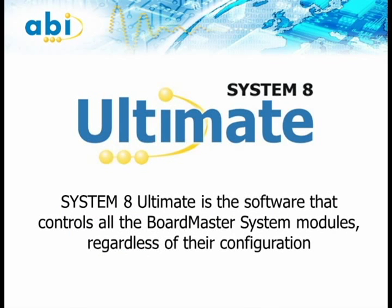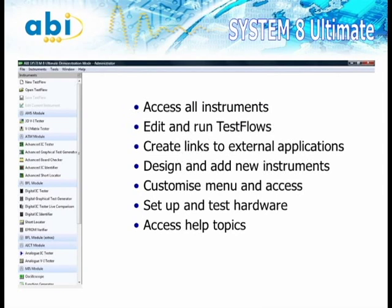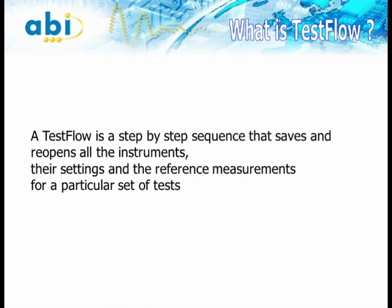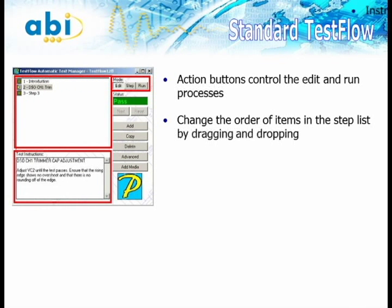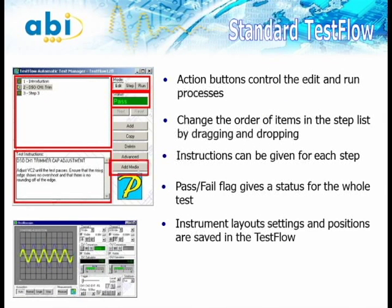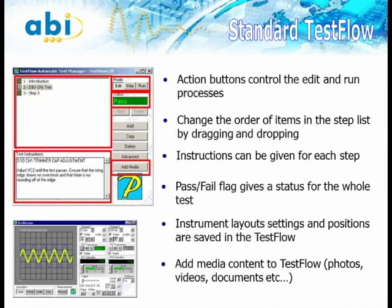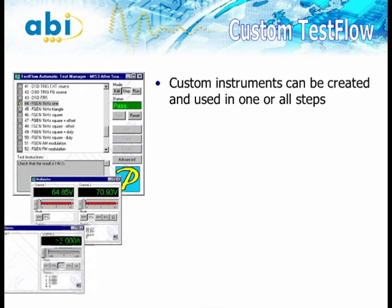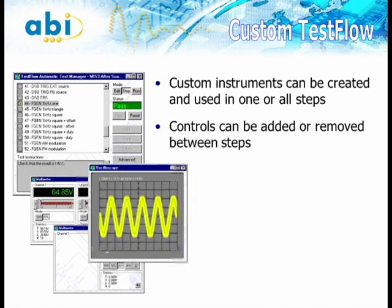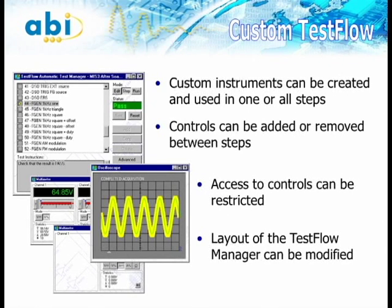All the modules are controlled by the System 8 Ultimate software. At the heart of System 8 Ultimate is the concept of Test Flow. Test Flow is an approach to testing and fault finding that not only speeds up the operation but also allows the system to be used by semi-skilled operators. Test Flow transforms the fault-finding process into a step-by-step procedure that reduces the risk of inaccurate measurements by recording all the parameters of the test. Technicians can write a test procedure or test flow for a particular PCB by setting up each stage of the process and recording the results.